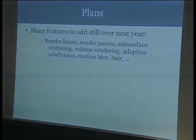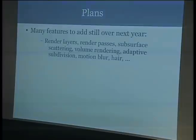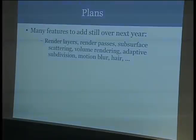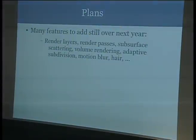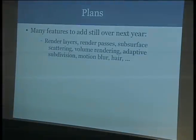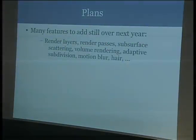We'll also add features — big things like render layers, passes, subsurface scattering, volume rendering, adaptive subdivision, all that kind of stuff. It's all really fun to add and we'll just start working on them one by one. The most important for Mango would be render layers, render passes, and volume rendering if you want explosions. Maybe subsurface scattering — we already have some code for adaptive subdivision, so if we need that we could look into it. We'll just keep adding features one by one over the next year and see where we end up.